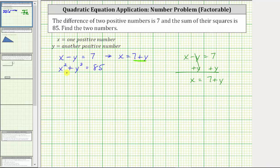So performing this substitution for x in the second equation, we get the quantity seven plus y squared, again by substituting seven plus y for x, and then we have plus y squared equals 85. Notice now we have an equation that only contains one variable.